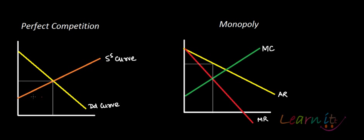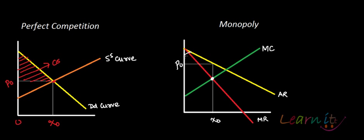In perfect competition, this is the demand curve and this is the supply curve. The equilibrium point gives X naught as equilibrium quantity and P naught as equilibrium price, so consumer surplus is the triangular area above P naught under the demand curve. In monopoly, equilibrium is defined where MC equals MR. At X naught the price is P naught, and consumer surplus is reduced considerably compared to perfect competition.